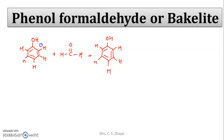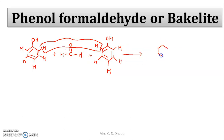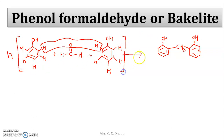During polymerization, a water molecule is eliminated — the hydrogen from phenol and oxygen and hydrogen from formaldehyde combine to form water. The resulting structure has a CH₂ group sandwiched between two phenolic rings, each bearing an OH group. When n number of phenol and formaldehyde units polymerize, this repeating unit forms Bakelite, written with bracket subscript n.